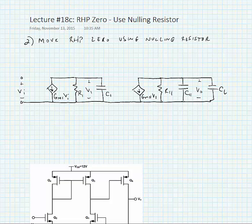As we just discussed, we can actually move the right half plane zero using a nulling resistor. This is a good solution especially for integrated circuits. The nulling resistor can be implemented with a MOS transistor.